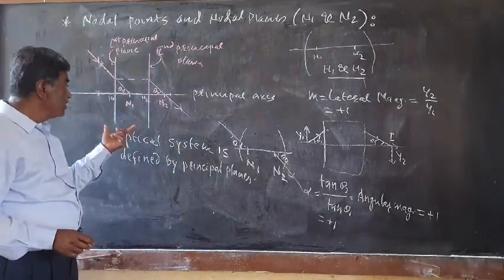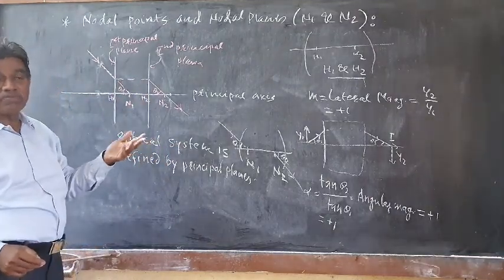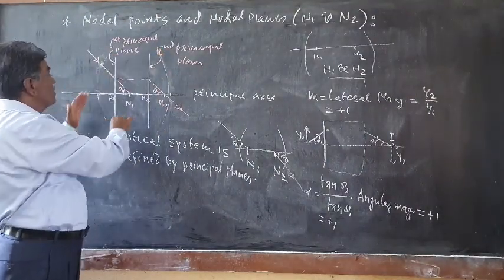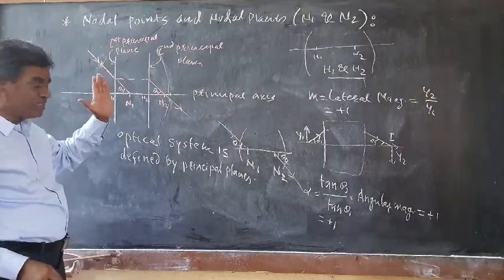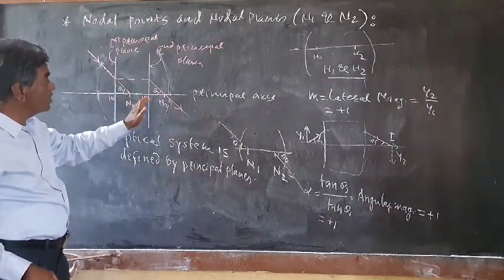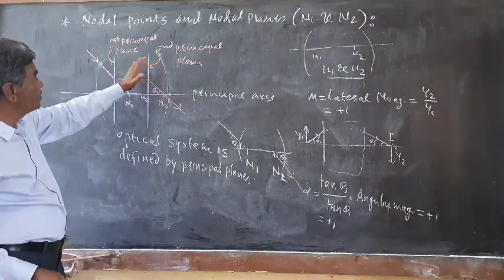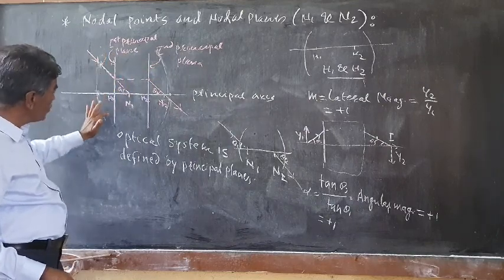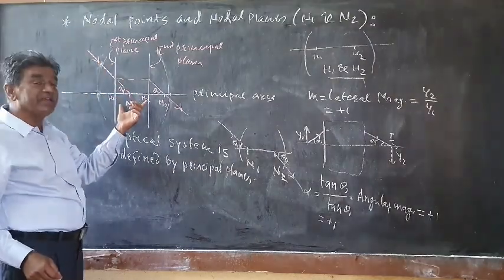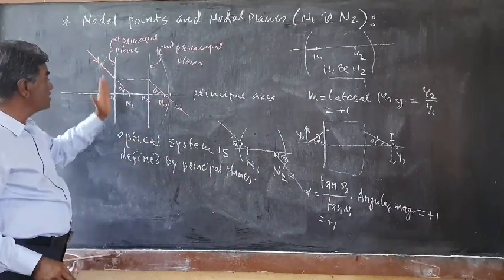In this figure, such points are shown. The optical system is defined by the principal planes. In the study of principal points, we saw that instead of the optical system itself, the optical system is defined by the first principal plane and the second principal plane — planes perpendicular to the principal axis passing through H1 and H2 respectively.